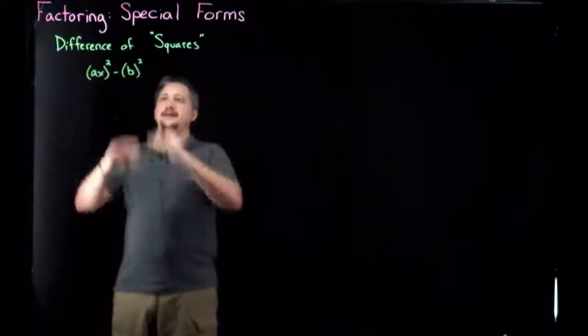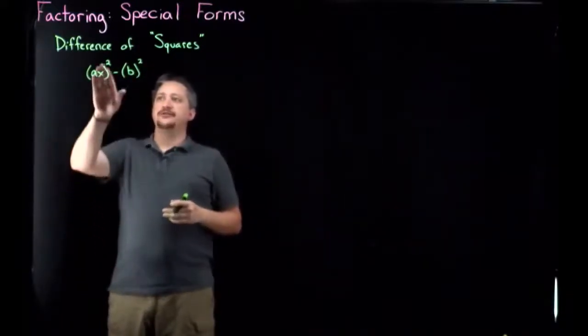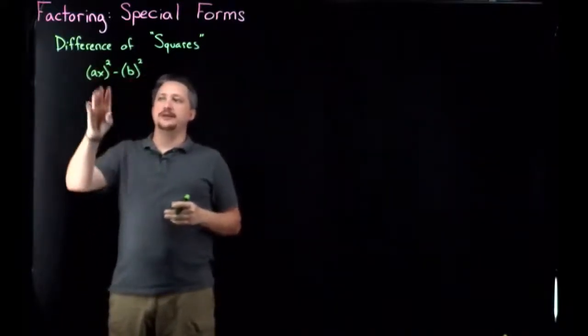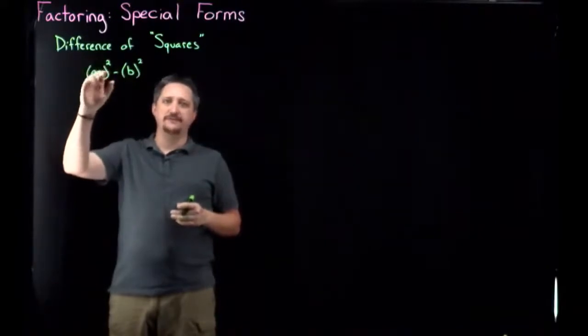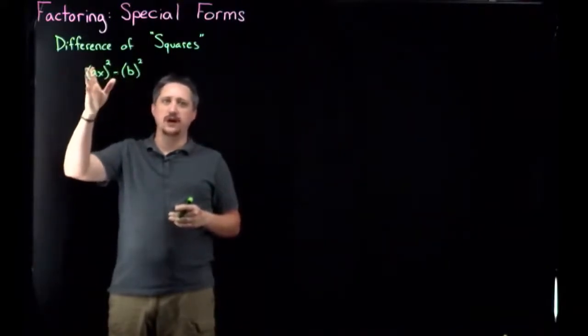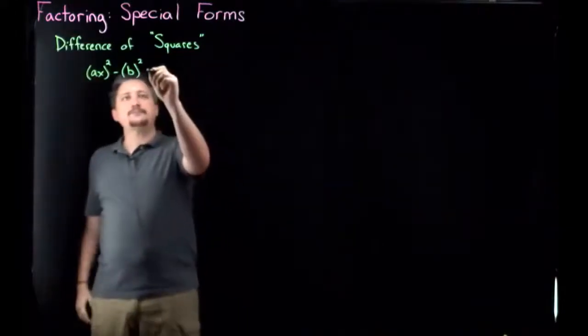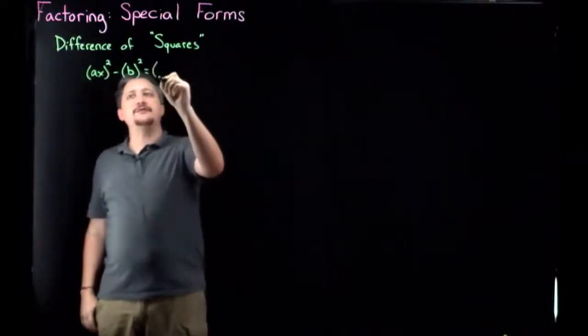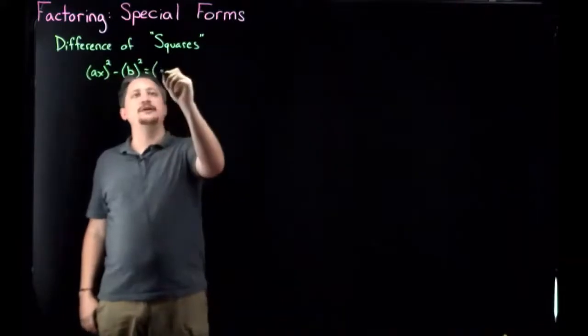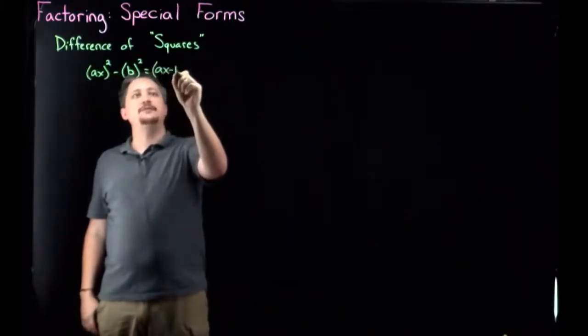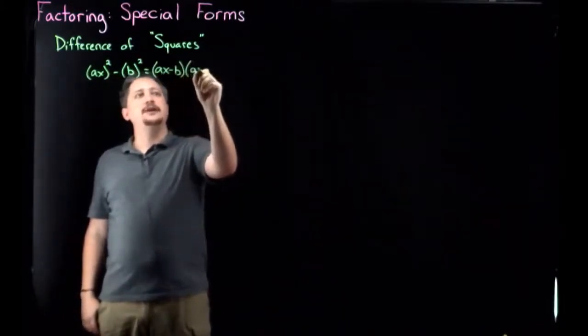This is the most common way of seeing it, but really all I care about is there's something squared and something squared. It could be all kinds of weird stuff, like a function, formula, whatever, squared minus squared. And this then gets factored, if I'm looking at it this way, into ax minus b times ax plus b.